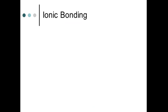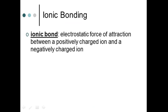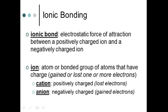In ionic bonding, we have a force of attraction between a positively charged ion and a negatively charged ion. One of the atoms in the compound has lost electrons and become positively charged, and the other has gained electrons and become negatively charged. Once you have that positive and negative, those opposite charges attract — and that's what we call an ionic bond.